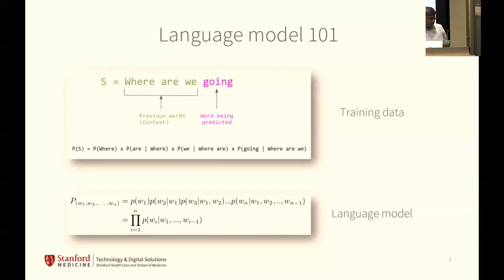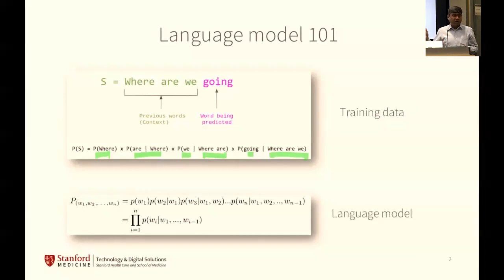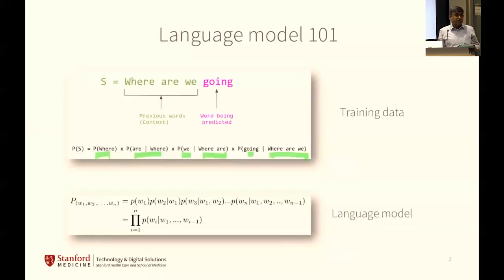Here's a simple example of a language model. There's a sentence: 'where are we going,' and the fourth word is 'going.' You can imagine learning the probability of this sequence of words — the probability of seeing 'where,' seeing 'are' given 'where,' seeing 'we' given those two words, and seeing 'going' given those three. If your training set was just two sentences, 'where are we going' and 'where are we at,' the probability of that pink word would be 0.5. A language model is essentially learning these probabilities on a massive scale.